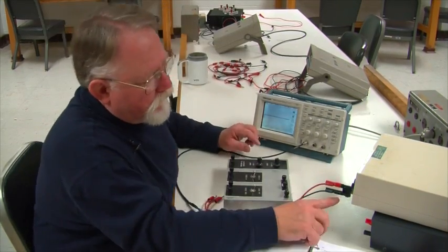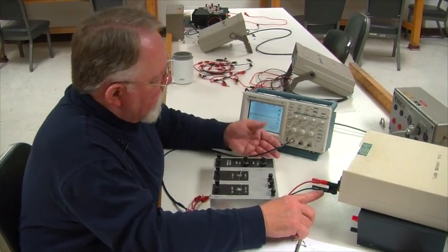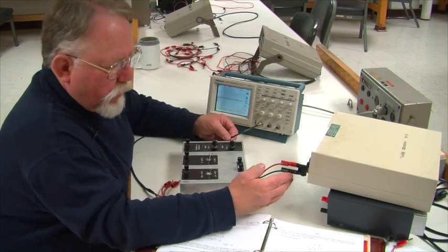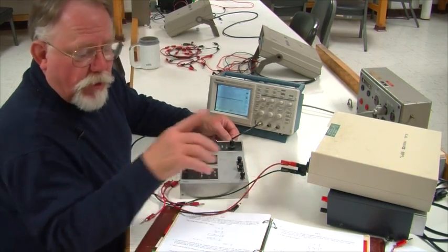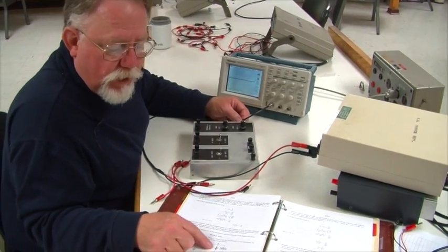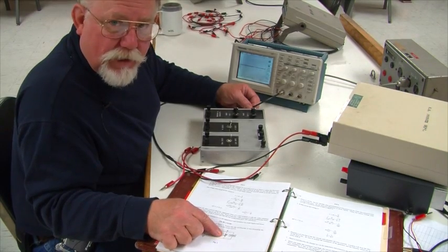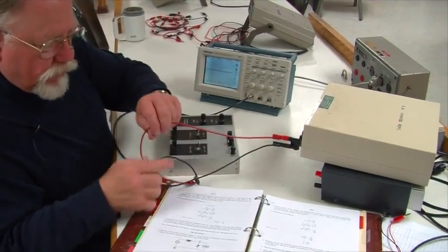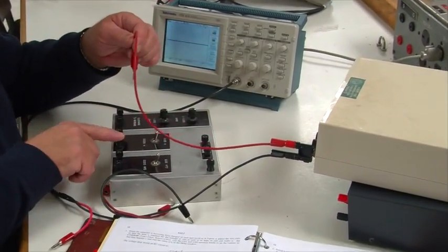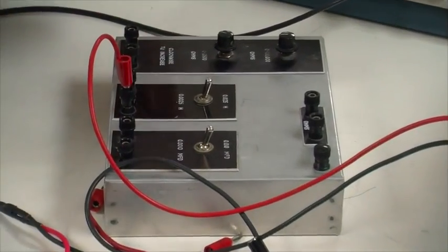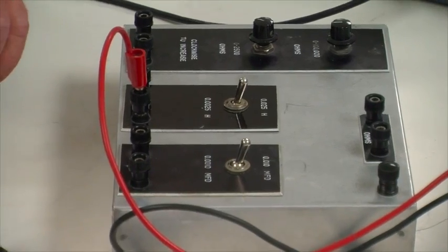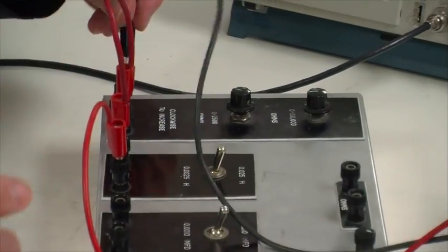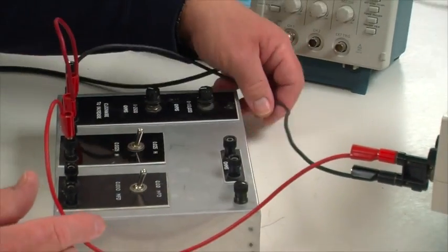Now, because of the fact that this is an earth ground, and the ground of these inputs are earth grounded, we have to be very careful that both of these are connected to the same ground. Which means that the component we measure always has to be last in the circuit, next to ground. So we come from the square wave generator to the inductor. That's this. Let's put it in here. We come out of the inductor and go to the variable resistor. And then we come out and back to complete the circuit.